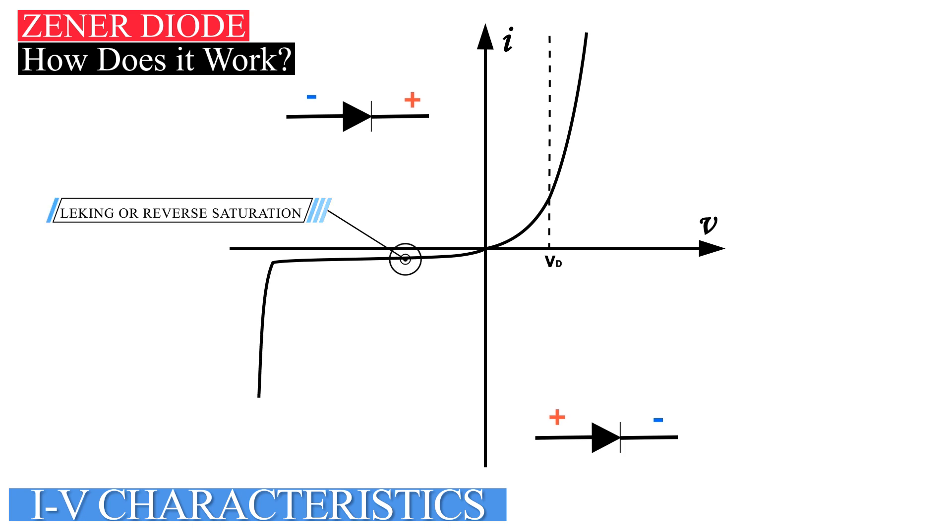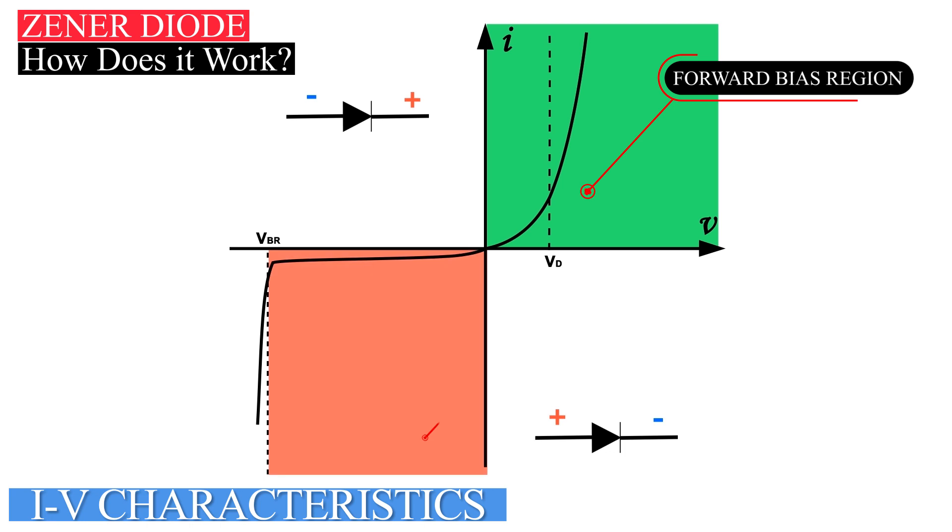When negative voltage is high enough, current starts to flow through diode in reverse direction. That value of voltage is known as reverse breakdown voltage. Normal diodes work in forward bias and reverse bias regions. If reverse voltage reaches reverse breakdown voltage, normal diode will be damaged.